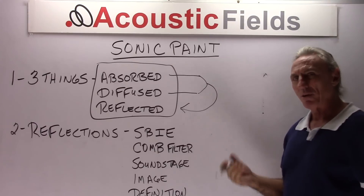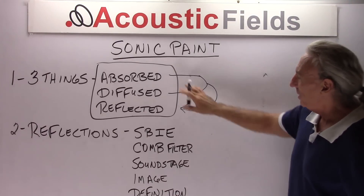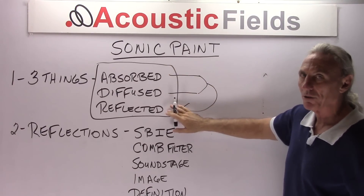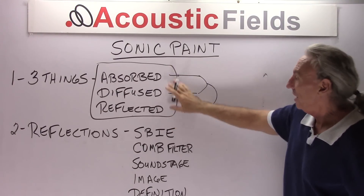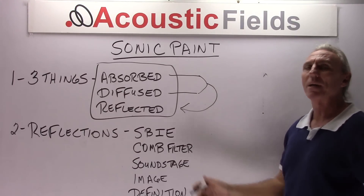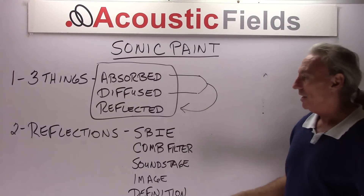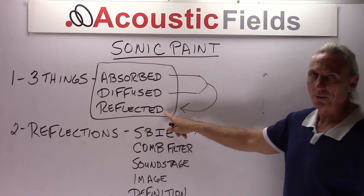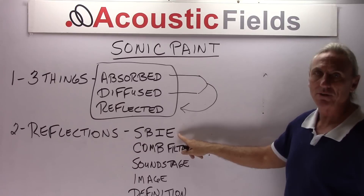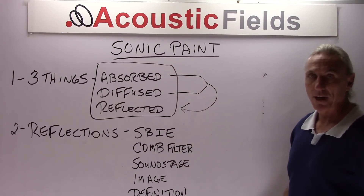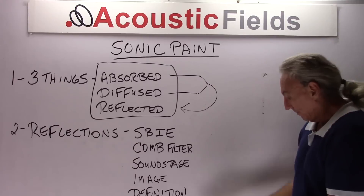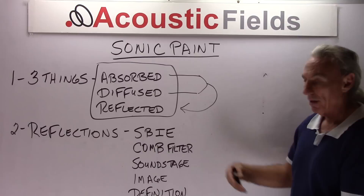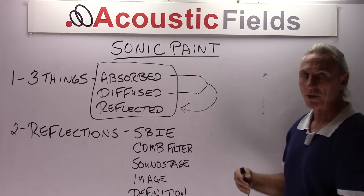It's the reflected energy that's always the problematic stuff. So we use two of the properties that happen to sound to manage the third one, which is unwanted. Absorption and diffusion we can live with — we can add more, take some out, and adjust depending on usage. But what are we always after? We're always after the reflections. Reflections cause lots of issues: speaker boundary interference effect, speaker too close to a wall, the energy between the speaker and the wall, comb filtering — a similar situation with back-and-forth movement of energy at different frequencies.